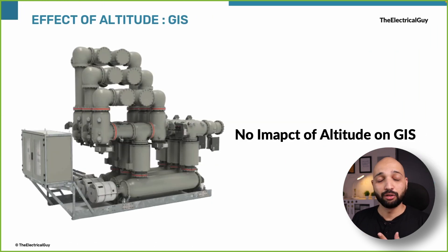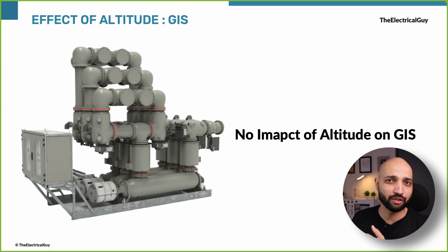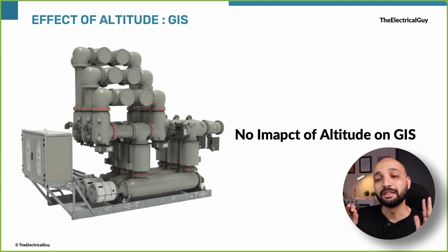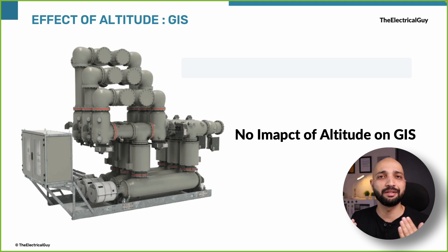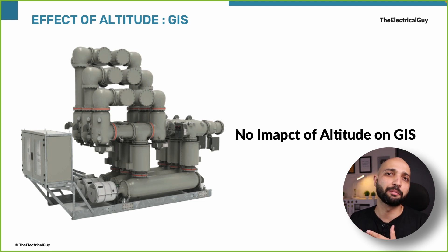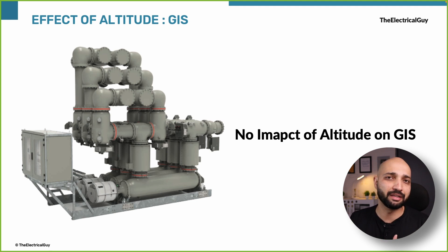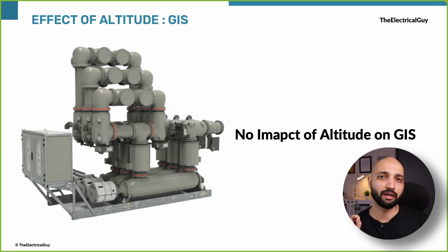Do we use air in GIS for insulation? The answer is no. So does altitude matter in case of GIS? Again, the answer is no. GIS has no impact from altitude because everything is insulated by SF6 gas — phase-to-phase and phase-to-ground insulation are both given by SF6 gas, and it is completely encapsulated. However, if outdoor bushings are used, those bushings need to be considered for higher altitude levels.